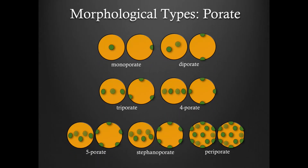Now let's take a look at the various morphological types for porate grains. As you can see in the cartoon shown, in most cases the number of pores present is implied by the name. For example, monoporate grains have a single pore, whereas triporate grains have three pores. The prefix stefano applies to grains where the apertures are situated around the equator — we generally apply this term to grains that have six or more apertures. The prefix peri applies to apertures that are randomly distributed over the surface of a grain, and most peri-aperturate grains have six or more apertures.